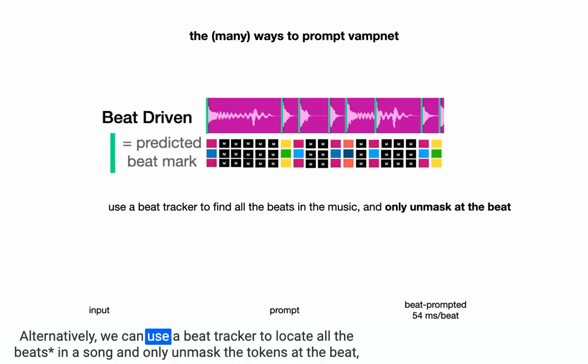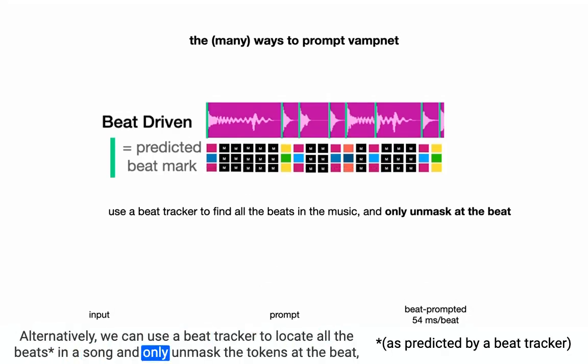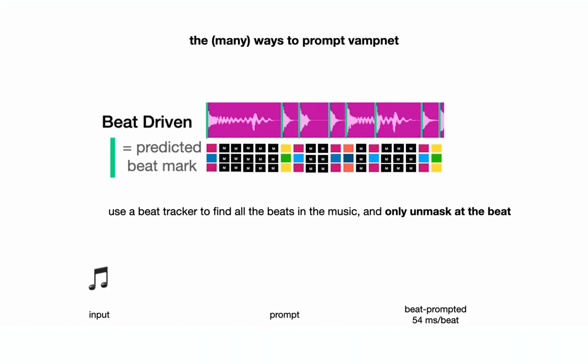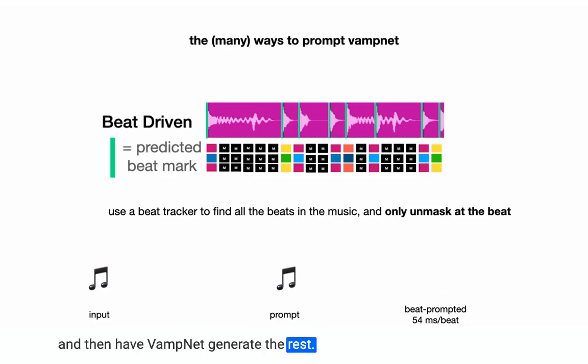Alternatively, we can use a beat tracker to locate all the beats in a song and only unmask the tokens at the beat, and then have VampNet generate the rest.